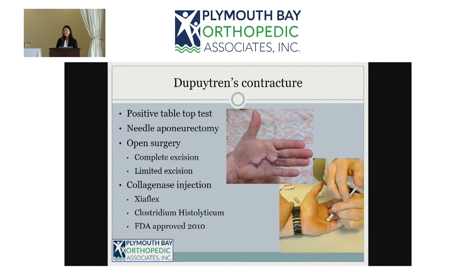The newer, more innovative treatment is a collagenase injection — an enzyme injection directed against collagen. The important thing is it's not directed specifically against Dupuytren's collagen; it targets any collagen. So if you inject it into any tendon or ligament you can rupture those as well, which is why it's really important to target only the Dupuytren's cord when injecting.